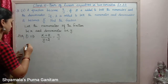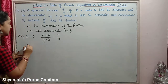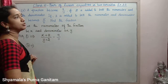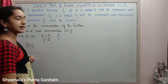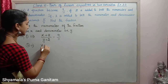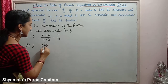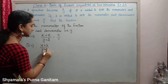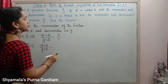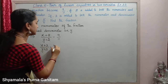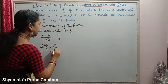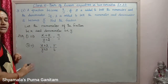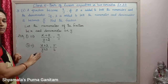This is the first condition. Then the second condition given is 3 is added to both numerator and denominator. So 3 is added to the numerator and the same 3 is added to the denominator, and the fraction becomes 5 by 6. So now we have two equations. These have to be simplified.